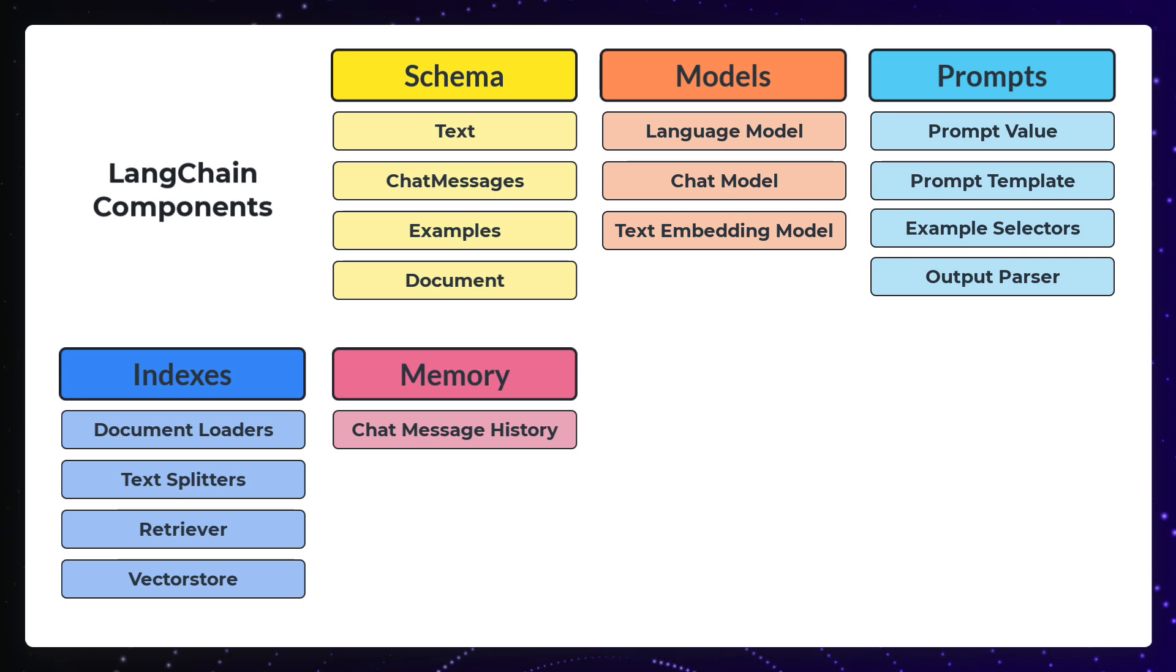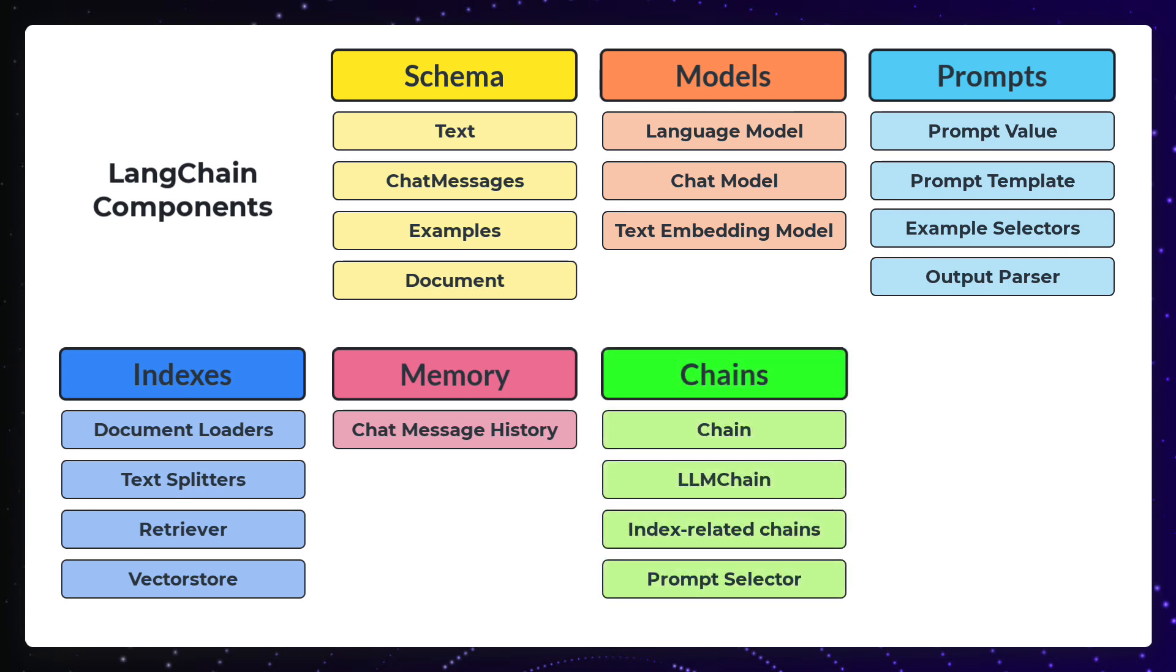With chains, we can combine multiple components to a step-by-step workflow. LangChain provides a standard interface for chains and provides some implementations like LLM chain, sequential chain, transformation chain, and so on. We can even create our own chain.